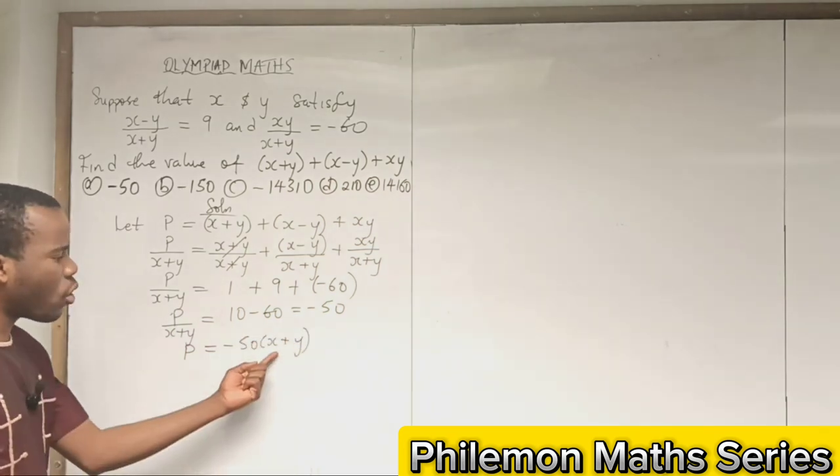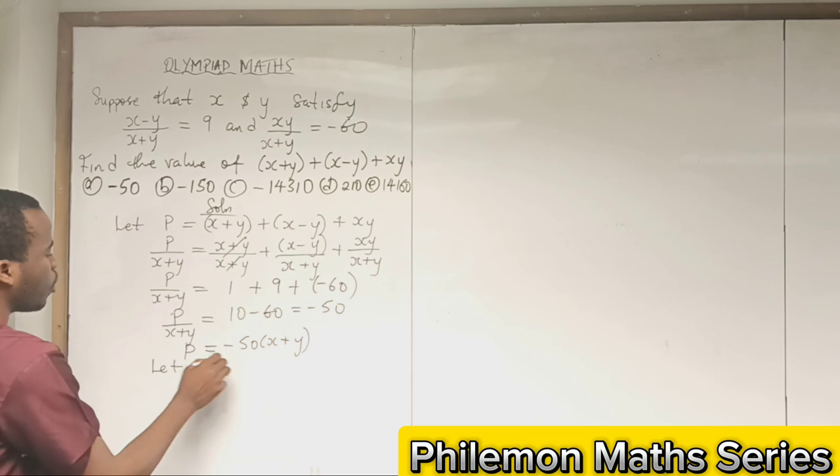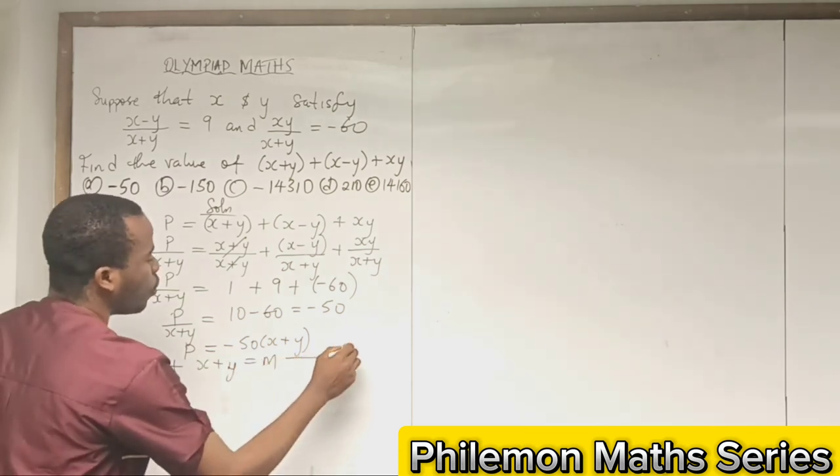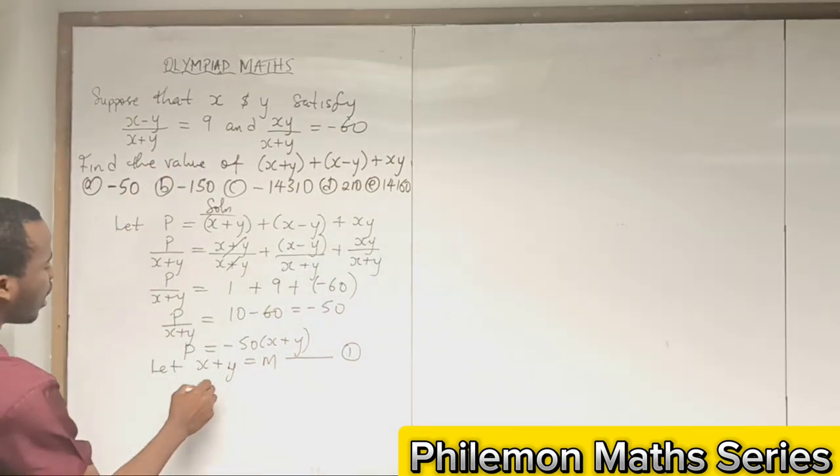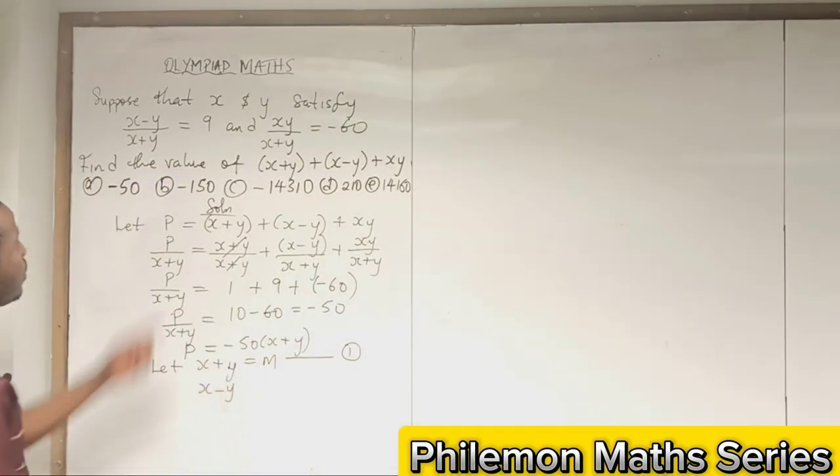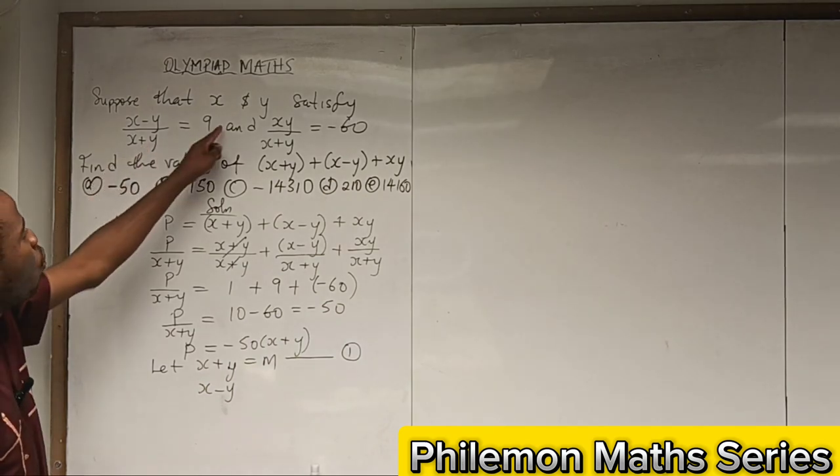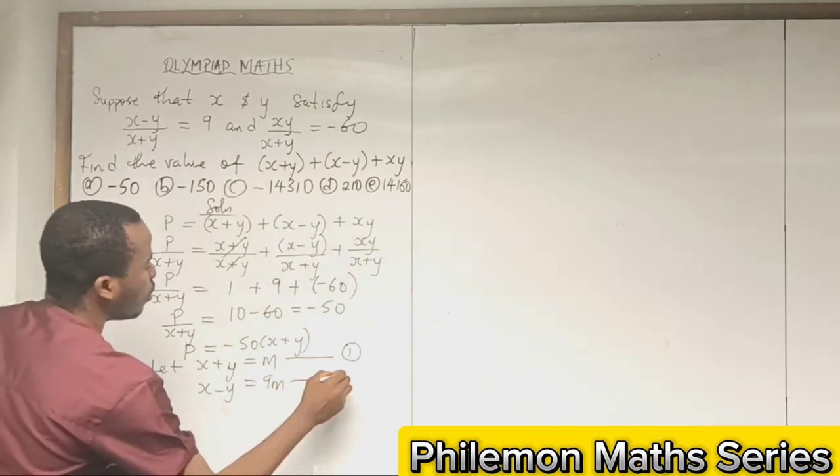Now let's call (x + y) = m. What we will do is multiply equation 2 by m.